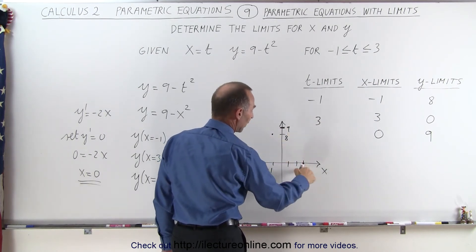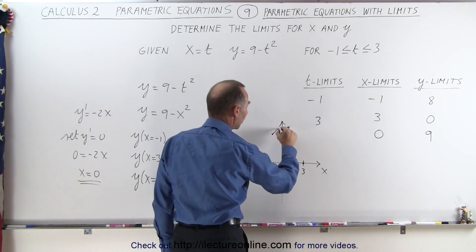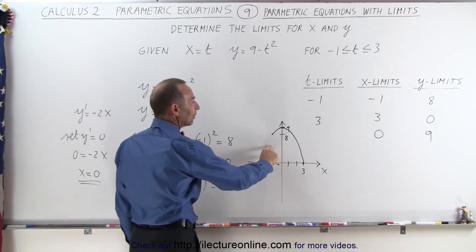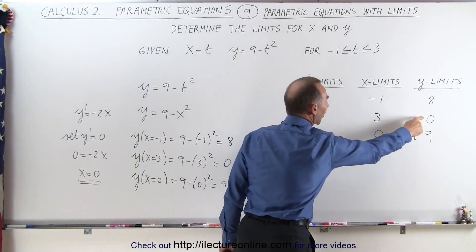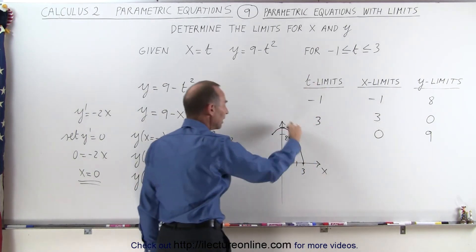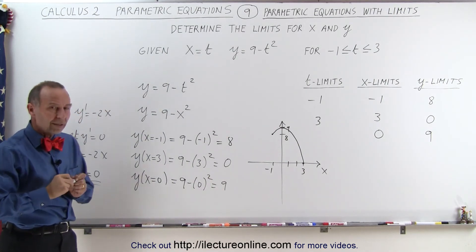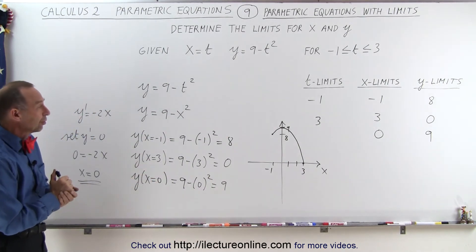So you can see when we connect these two endpoints and the 0 slope, we then see that that's what the function looks like. And therefore, the limits for y did not fall between 0 and 8, because we didn't have a good representation by just using the endpoints.